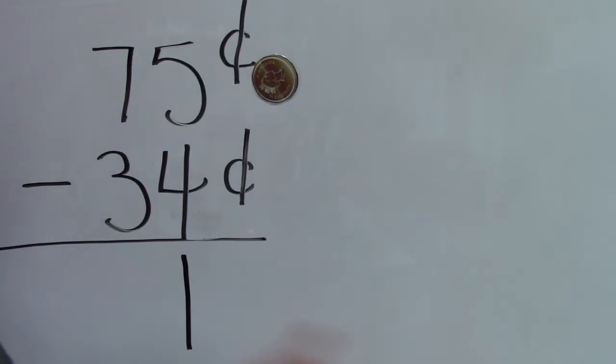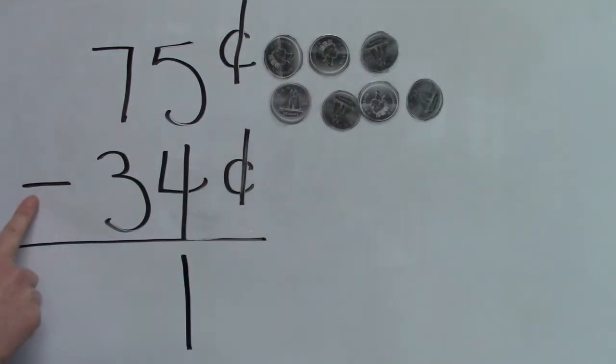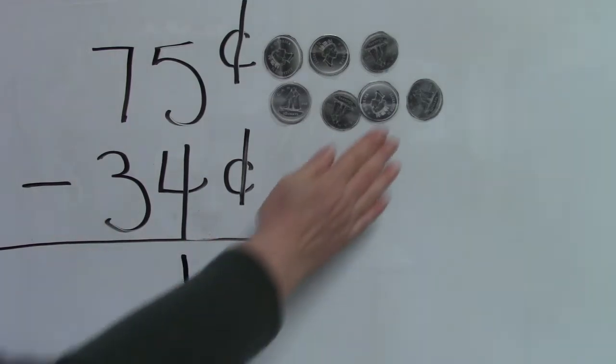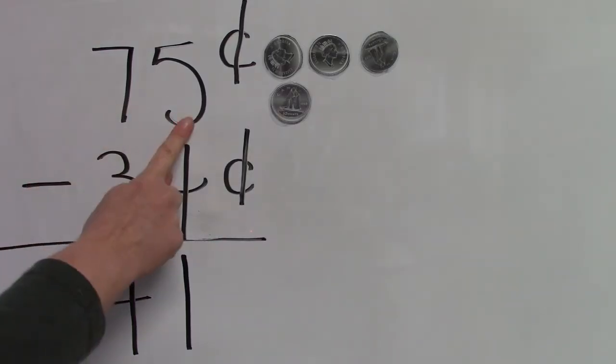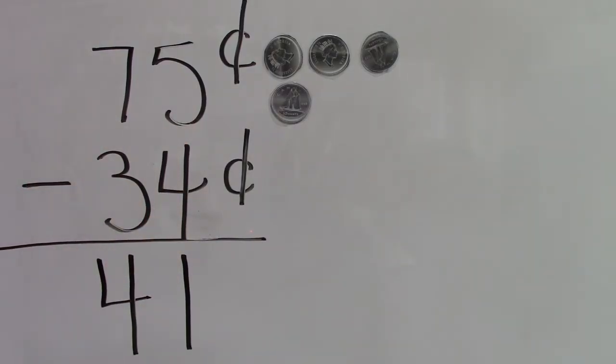Now we're going to take a look at the tens place and the tens place would not be the pennies place, it would be the dimes place. Seven take away three. Seven take away three is four. I'm going to put the four in the tens place directly underneath our seven and three which are in our tens place or our dimes place. The answer to this question 75 minus 34 is 41 cents.